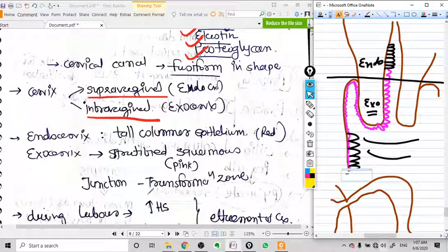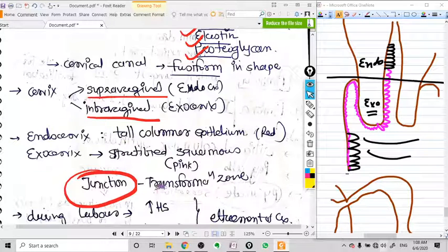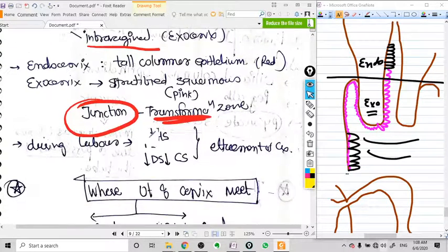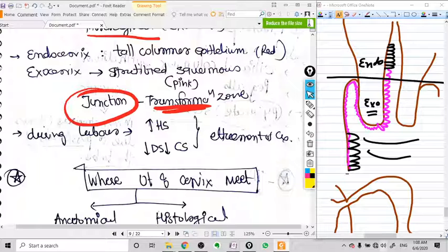The transformation zone is nothing but the change of mucous membrane from stratified squamous epithelium of vagina to tall columnar epithelium of uterus. At this point of time, carcinoma cervix arises in this site.